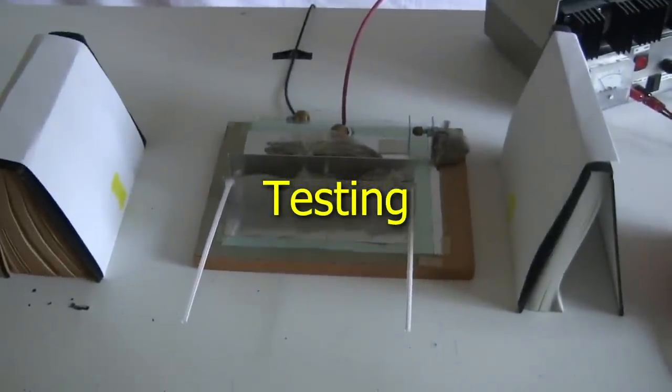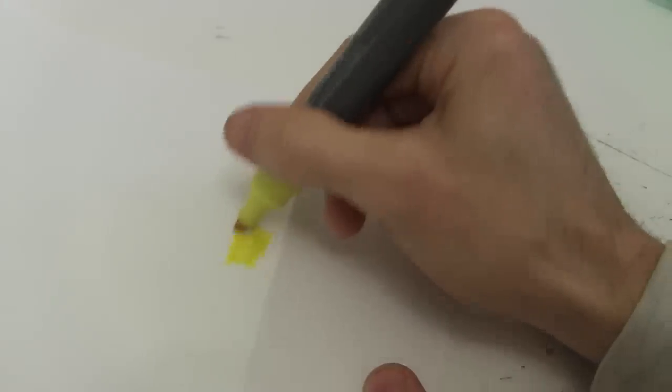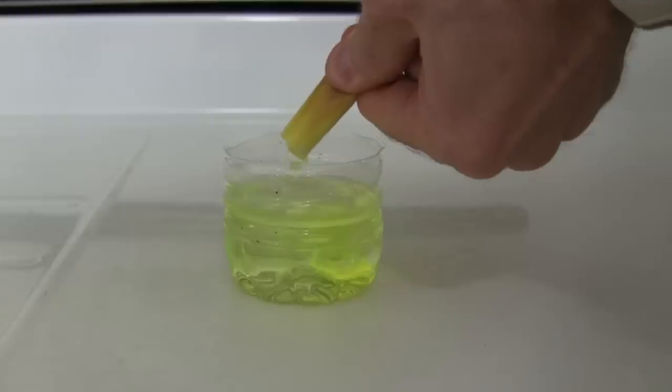And here it is in action. Notice that you can't see the laser beam. It's ultraviolet light which our eyes can't see. But when it hits white paper, the paper gives off visible light. It fluoresces. You can also draw on the paper with a highlighter pen and the ink also fluoresces. Or you can put highlighter ink in tap water and it fluoresces as the beam passes through it.